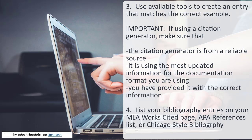If you are using more than one source, you must repeat these basic steps for every source you are using. Step 4: List your bibliography entries on your MLA Works Cited page, APA Reference List, or Chicago Style Bibliography. MLA, APA, and Chicago Style all require that you list multiple sources in alphabetical order based on the author's last name, or if there is no author, the first important word in each entry.